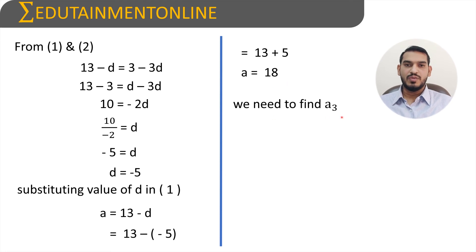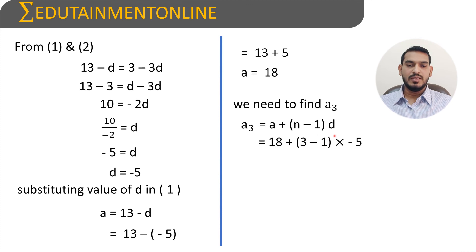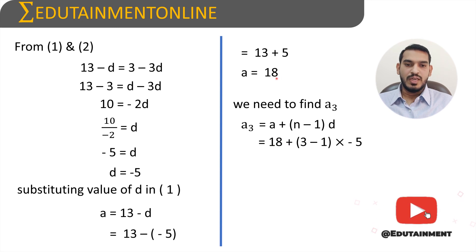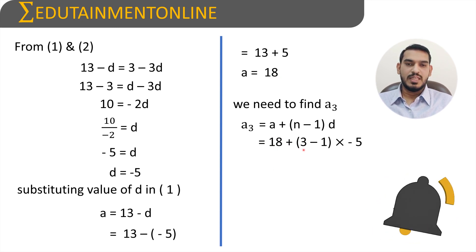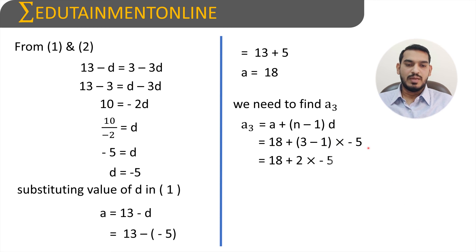Now we need to find a3. Using the nth term formula, a3 is equals to a plus n minus 1 into d. Substituting n=3 and a=18 and d=minus 5, we get a3 is equals to 18 plus 3 minus 1 times minus 5, which is 18 plus 2 times minus 5, giving 18 minus 10. So a3 is equals to 8.